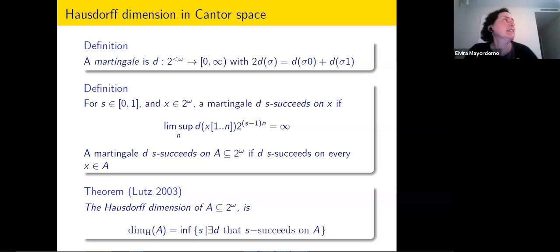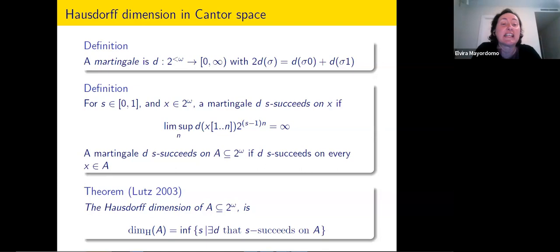In the case of effective dimension, we want this success to be even better. Given an infinite sequence x — apologies for the noise outside — the idea is that a martingale d s-succeeds on an infinite sequence, meaning it goes to infinity faster than 2 to the power of 1 minus s times the length.